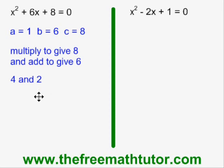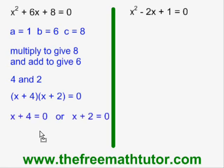So my expression factors as (x + 4)(x + 2) = 0. I do the split, I make each of these binomials equal to 0, and then I isolate x. My answer is x = −4 or x = −2. This means that the two roots of this quadratic equation are −4 and −2.